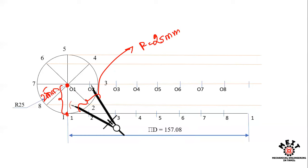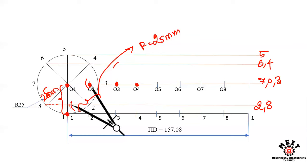Place the compass at center 2 and draw an arc intersecting the horizontal line from point 2 to get the second curve point. At center 4, draw an arc on the corresponding line to get the 4th point — this is the peak point of the cycloid, since point 4 is at the top of the circle. Continue for centers 5, 6, and 7.